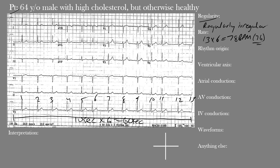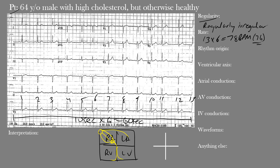Now how about the rhythm origin? We have narrow QRS complexes here, so the rhythm must be supraventricular in origin — originating above the ventricles. We can also make out clear, defined, similarly shaped P waves, so we should look to see if we're dealing with a sinus rhythm. The sinus node starts up in the right atrium, with internodal pathways coming to the AV node, a Bachmann bundle to the left atrium, and then the His bundle splitting into the right and left bundle branches, with the left having anterior and posterior fascicles.